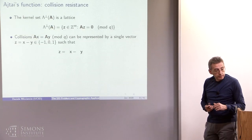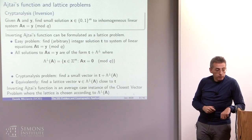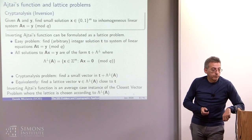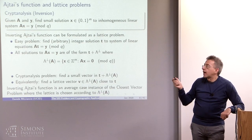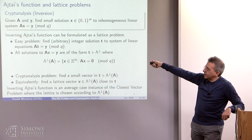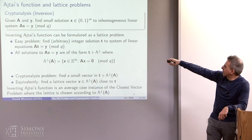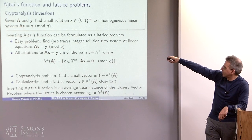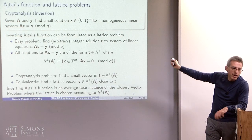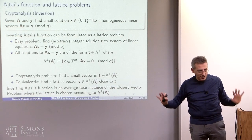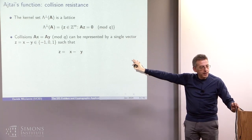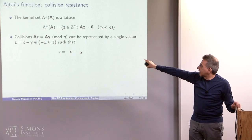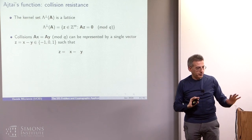Close here doesn't mean close in any norm, really — you would get minus-one, zero, one vectors. In order to think of this as close, instead of zero-one, you want to take zero, one, minus-one — which is just as fine. I'm using zero-one because it makes it easier to illustrate the connection with collision resistance.